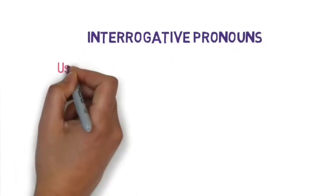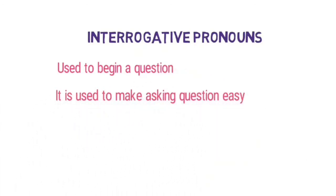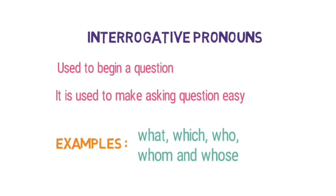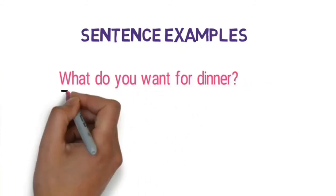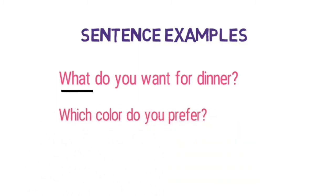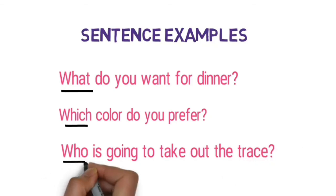We are moving to the interrogative pronouns. They are used for questions — to begin a question and make asking questions easy. You know these words: what, which, who, whom, and whose. Here are sentence examples: 'What do you want for dinner?' — 'what' is used for asking a person about their choice of food. 'Which color do you prefer?' — used for questioning about color preferences. 'Who is going to take out the trash?' Remember, interrogative pronouns are used when we are asking questions, and they really help us to build and form those questions.